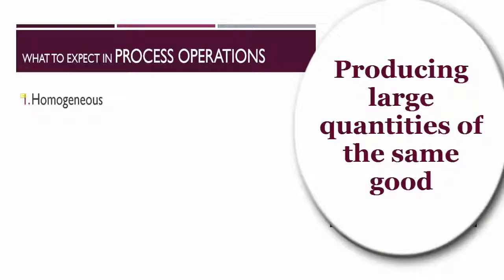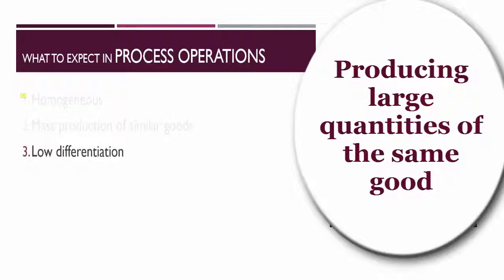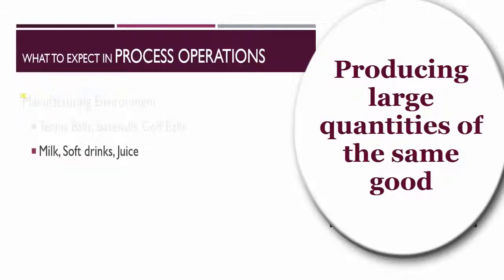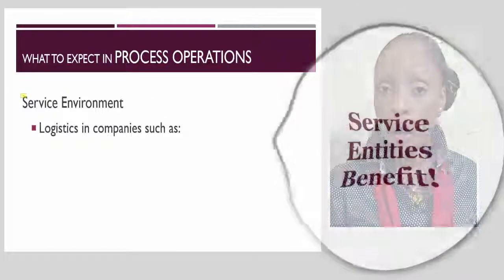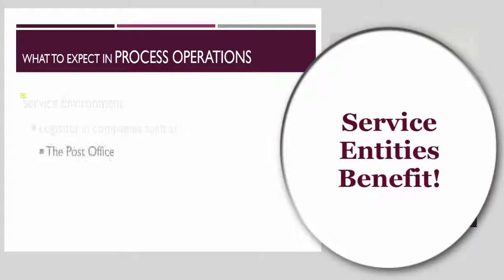Typically, one would see the production of homogeneous goods that are mass-produced and very similar in nature. The goal here is low differentiation and, as a result, the processes are standardized. Within this type of environment, we see the production of tennis balls, milk, juice, chocolate, or crunch bars. It is also appropriate to service organizations — the logistics within companies such as the post office or Amazon benefit from the efficiency that comes from streamlining operations.